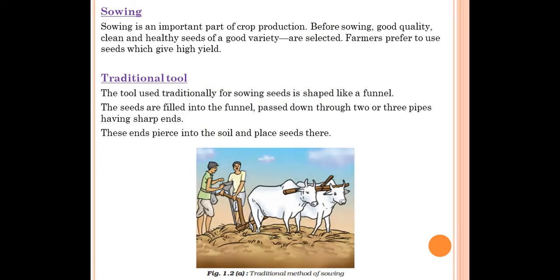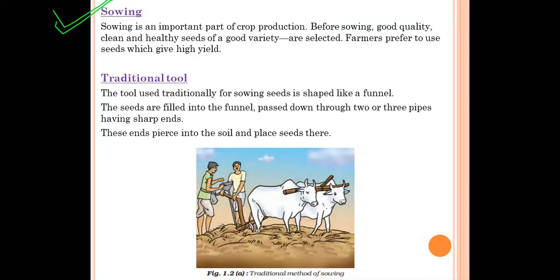Today we start from the topic: sowing. What is the meaning of sowing? When farmers grow crops in their farmland, they start with the sowing of seeds — that process is called sowing. Sowing is a very important part of crop production; without this step one cannot grow any crop. Before sowing, farmers have to select good quality, healthy seeds so that they get a good yield of high quality crops.